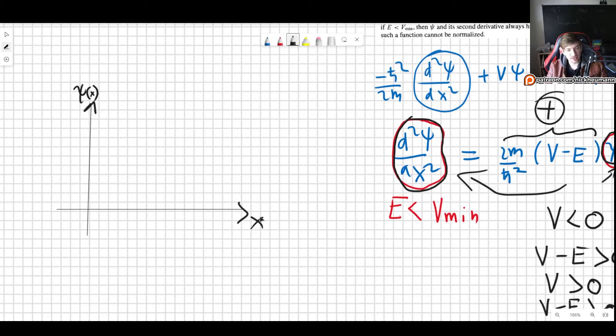So let's say that the wave function is positive. That means that the second derivative is also positive. Now what does the second derivative say? It basically says how your function will behave. It's going to be concave upwards, something like this.